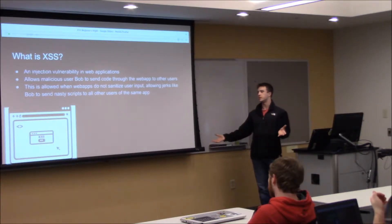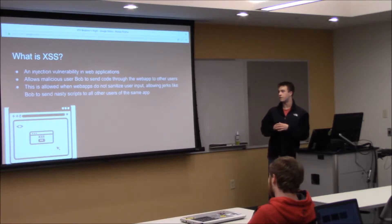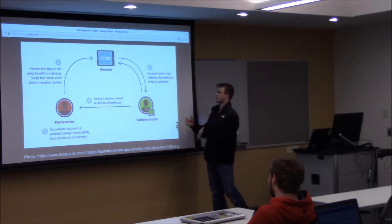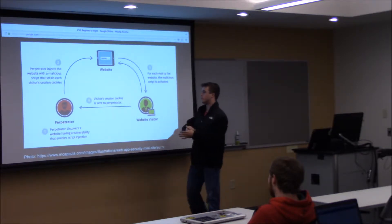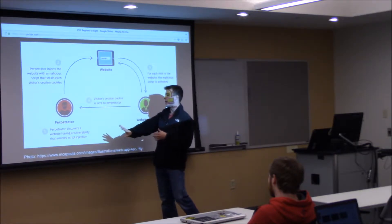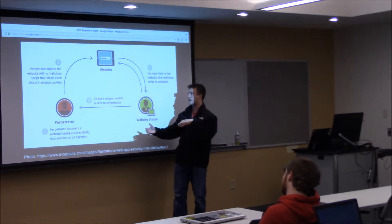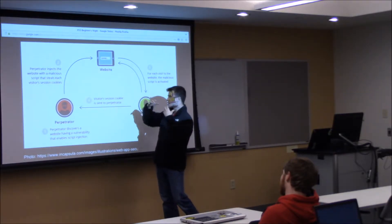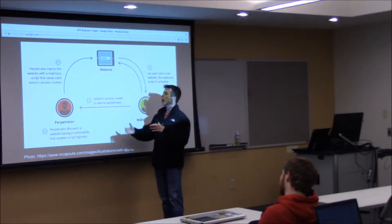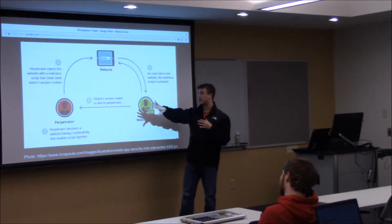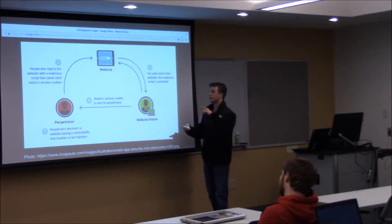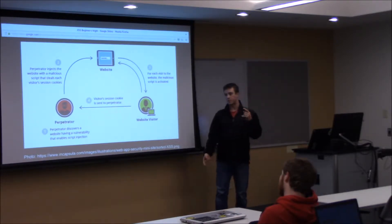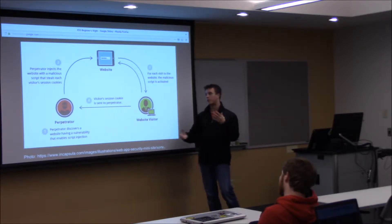If Bob wants to do some nasty things to all the other users, he can send JavaScript code to do that if there is no sanitization. You have your attacker who's using a web app and discovers they can put input into it and execute code, typically through JavaScript. They verify it usually with an alert box. One of the nasty things you can do is steal session cookies, which can allow you to pose as the user — take over their session — whether that be banking or social media.